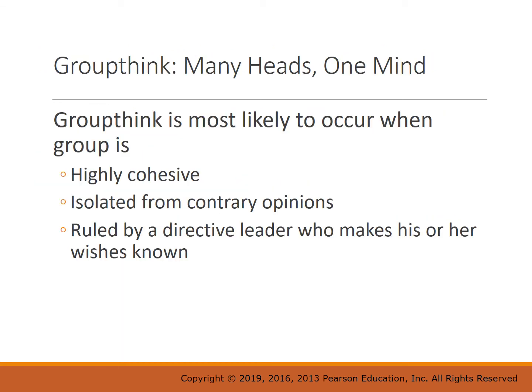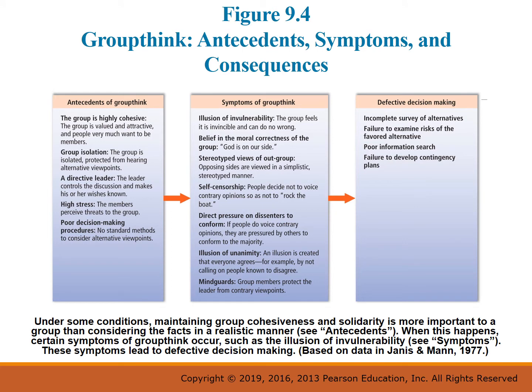Kennedy and his advisors were riding high on their close victory in the 1960 election. They were a very tight-knit, homogenous group and had not yet made major policy decisions, so they lacked well-developed methods for discussing major issues. Kennedy made it clear he favored the invasion and asked the group to consider only details of how it should be executed, rather than questioning whether it should proceed at all. They were highly cohesive, isolated from contrary opinions, and ruled by a directive leader.